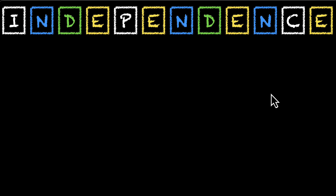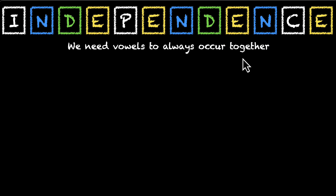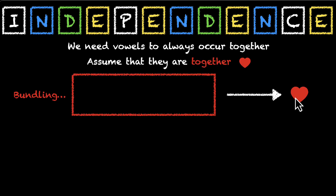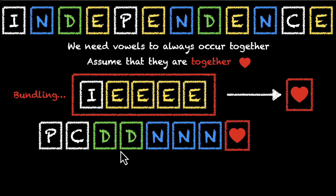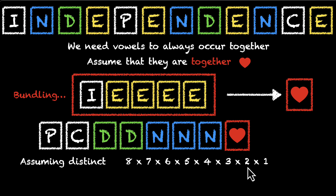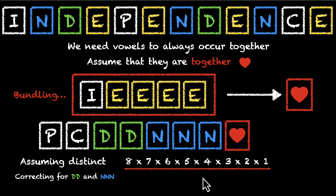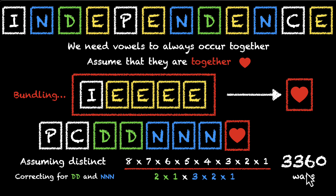Now, in how many arrangements do all the vowels always occur together? This means bundling is going on. The vowels in independence are I, E, E, E, E — five vowels. We treat them as a single unit, calling it a bundle. Now we have the four consonants (N, N, N, D, D, C) plus the bundle — eight letters total. Assuming all different, we have 8! ways. We correct for two D's and three N's, dividing by 2! and 3!, giving us 3360 ways.